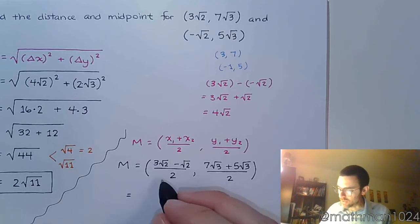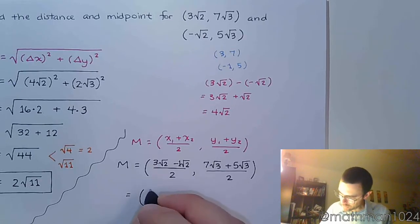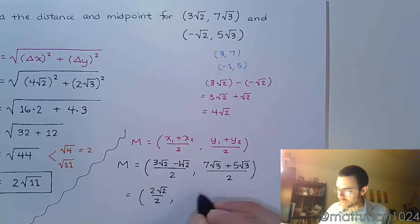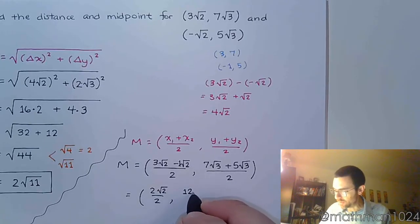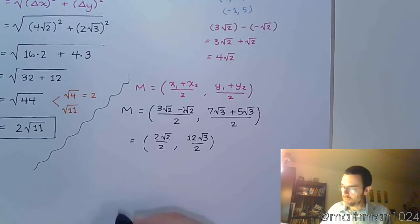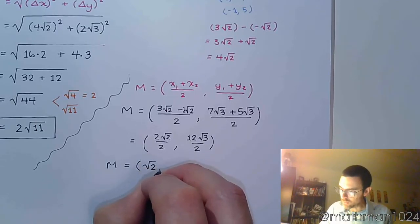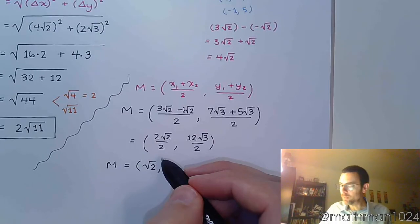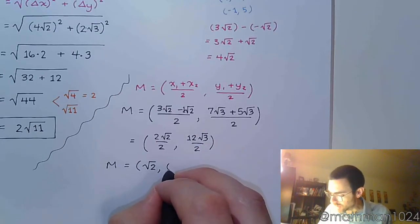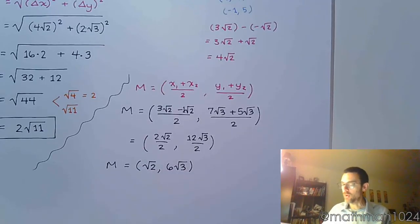And we'll just work this out. So this is 3 minus, this is understood to be a 1, so we get 2√2 divided by 2, and over here we have 12√3 divided by 2. Finish by simplifying. We end up with the √2, because 2 divided by 2 is 1, and 12 divided by 2 is 6, so we get 6 times the √3.